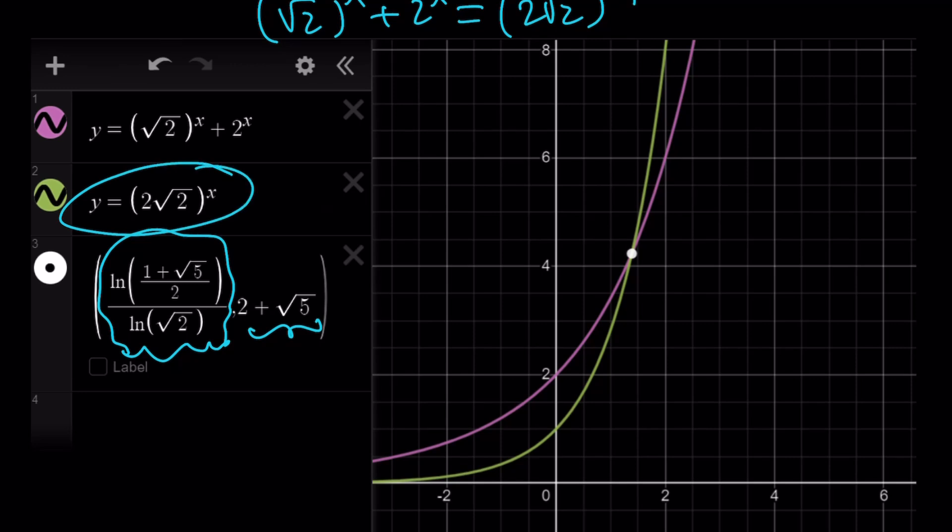I hope that makes sense. And notice that the green graph is going to grow faster. First, it's slow, and then they're going to intersect, and then they'll never intersect again. So we have a unique solution.